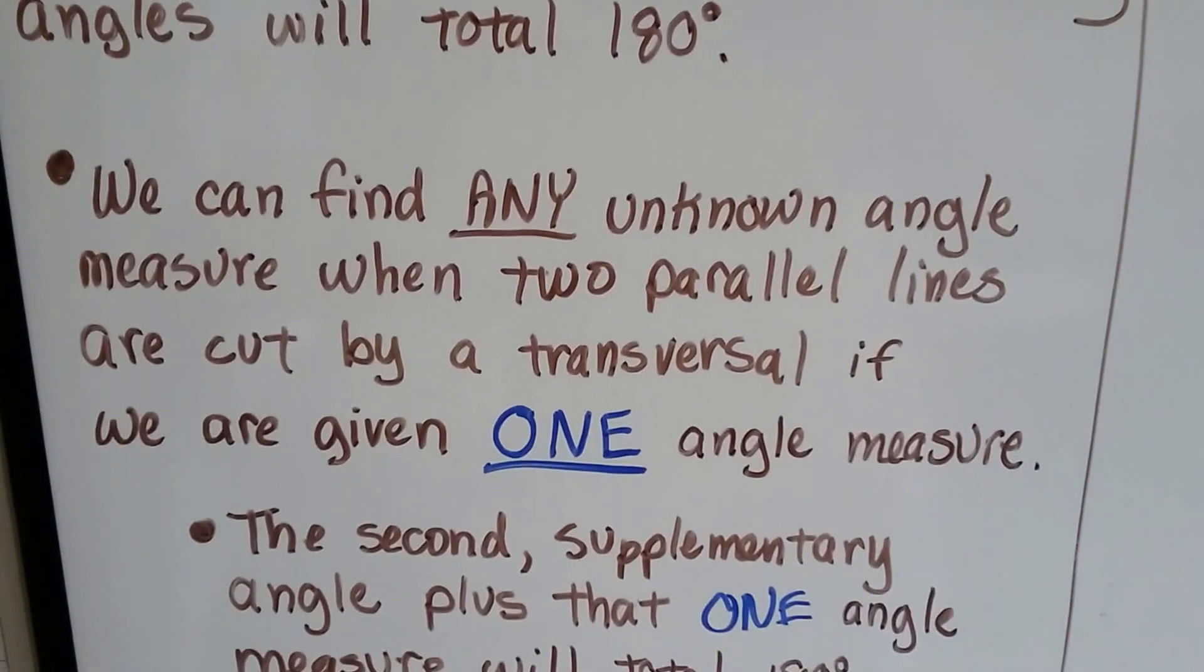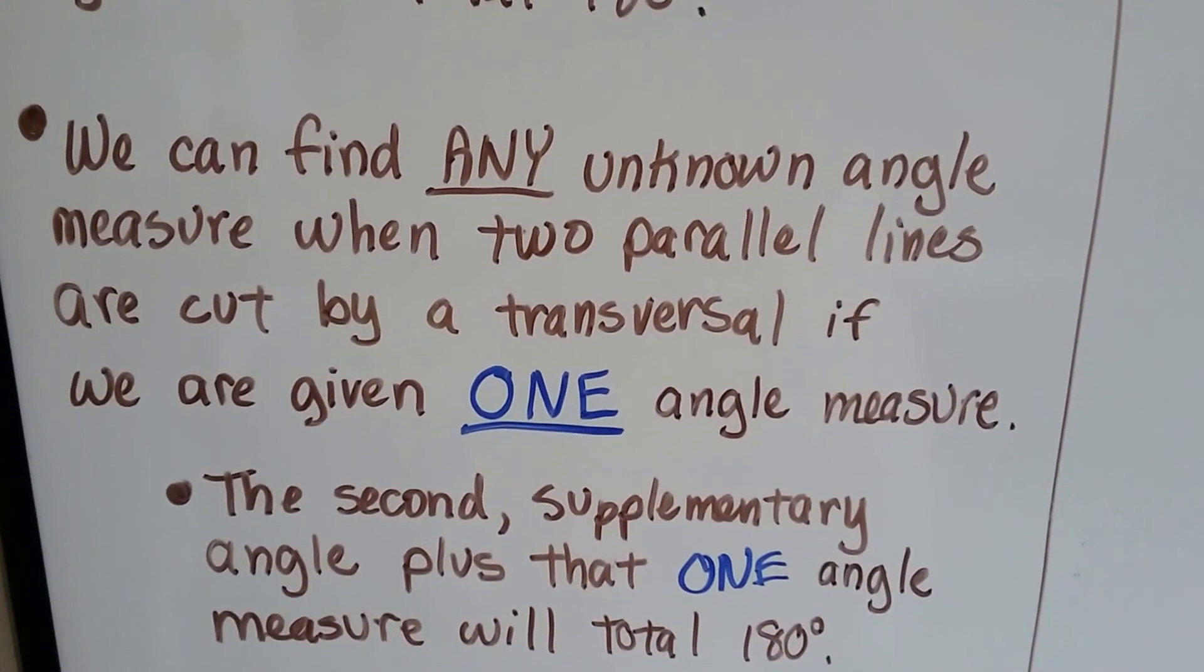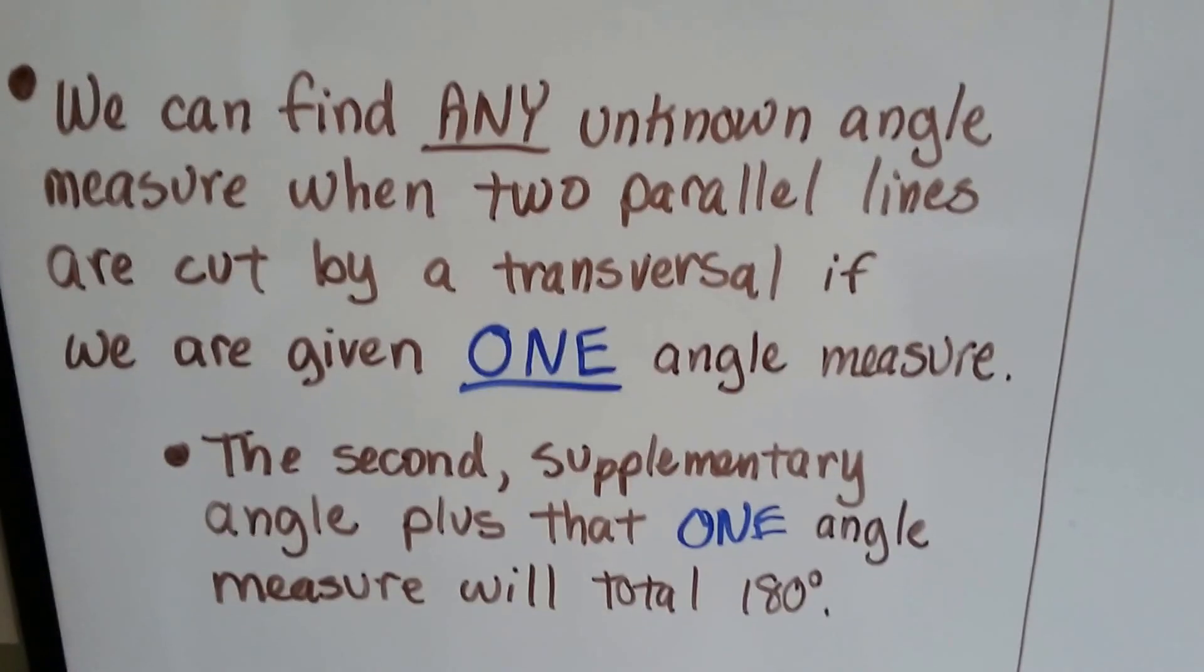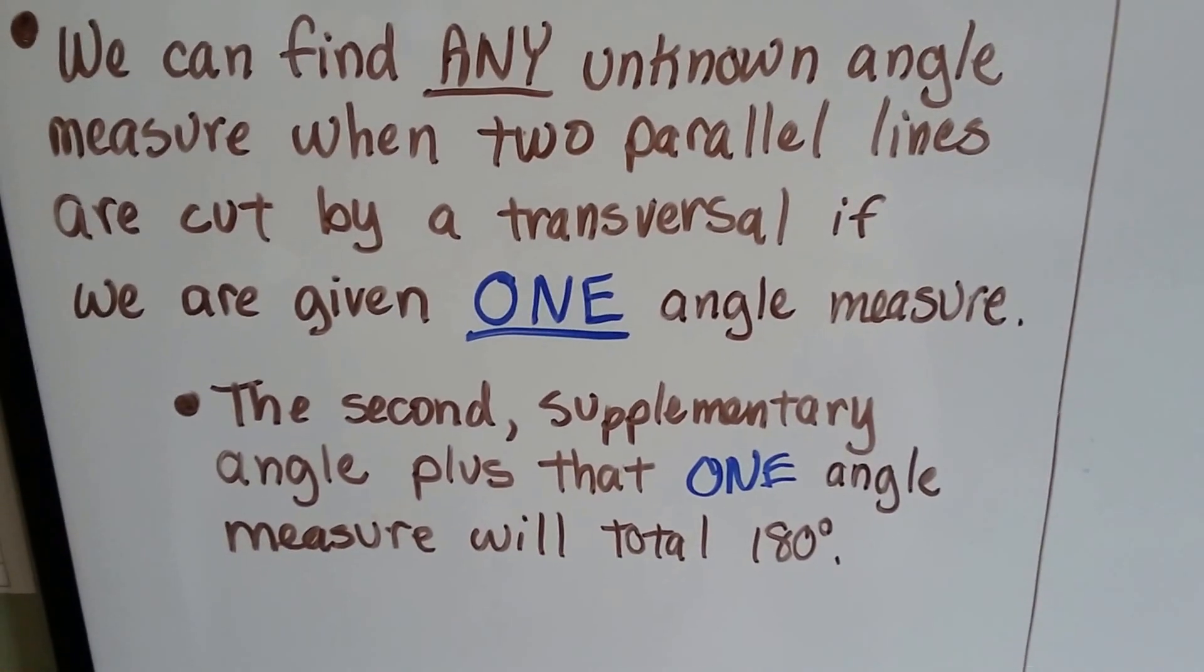We can find any unknown angle measure when two parallel lines are cut by a transversal if we're given one angle measure. The second supplementary angle plus that one angle measure will total 180 degrees.